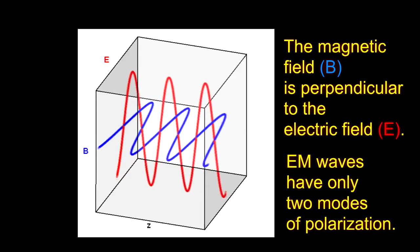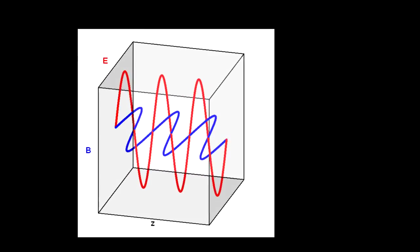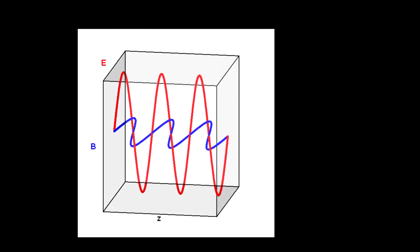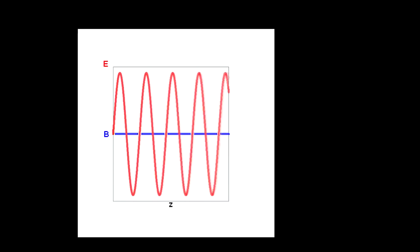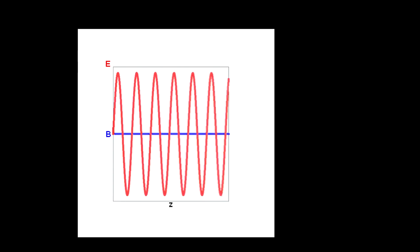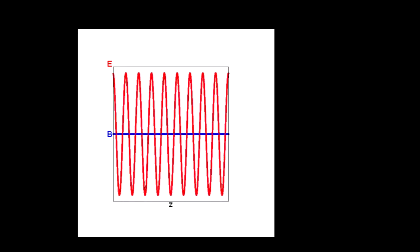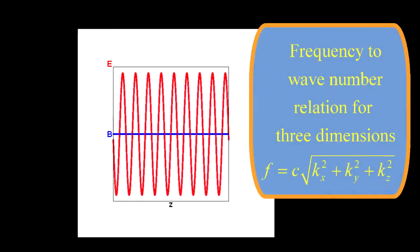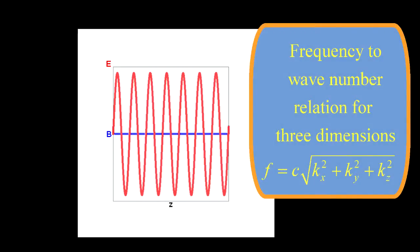The wave equations predict another feature of our world that many physicists noticed, but no one could figure out. In order to satisfy the wave equation, radio waves must have a fixed relationship between the frequency f and the number of waves per meter in the x, y, and z directions: kx, ky, and kz. The relationship is given by this formula.